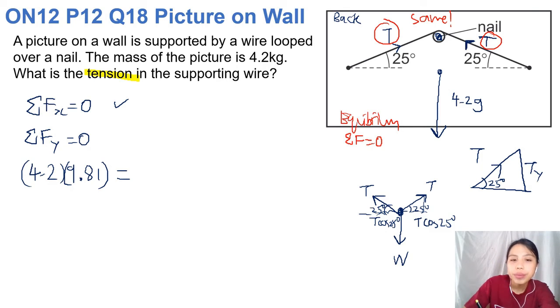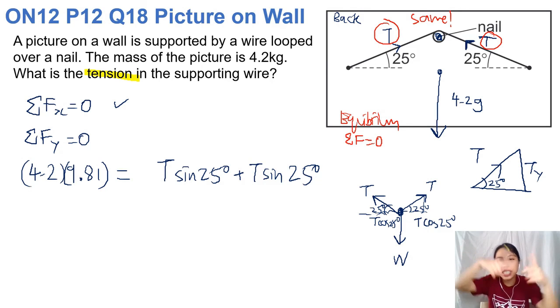So you can say the Ty is the part going up. So T sine 25. That's for one side of the string. Got another part. So T sine 25 again. Because you got two strings, one tension, one tension. Although they are technically the same string, there's two tension forces at play. So you need to remember there's two. So if you want to shortcut a bit, you can just say it's 2T sine 25.